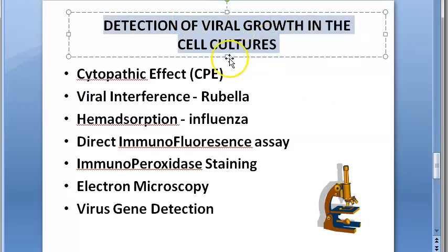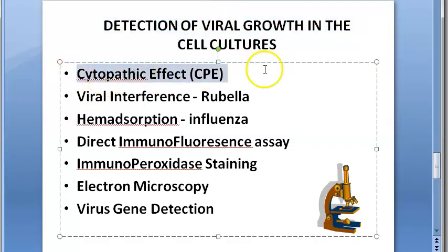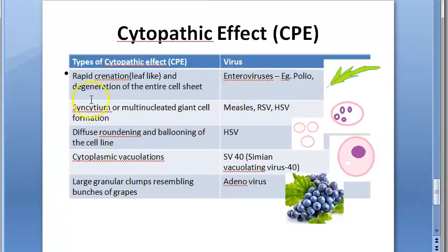To detect viral growth in cell culture, you can detect the cytopathic effect of the virus. As soon as you see some problem in the cells caused by the virus, that is the cytopathic effect. The cytopathic effect is basically the morphological change in the cell because of the virus, observable under a light microscope.